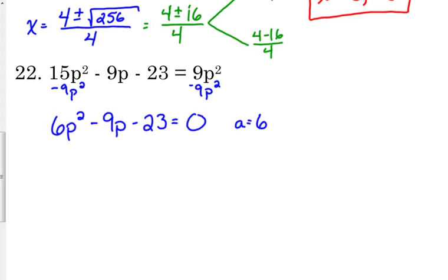So our a is 6, our b is negative 9, and our c is negative 23.